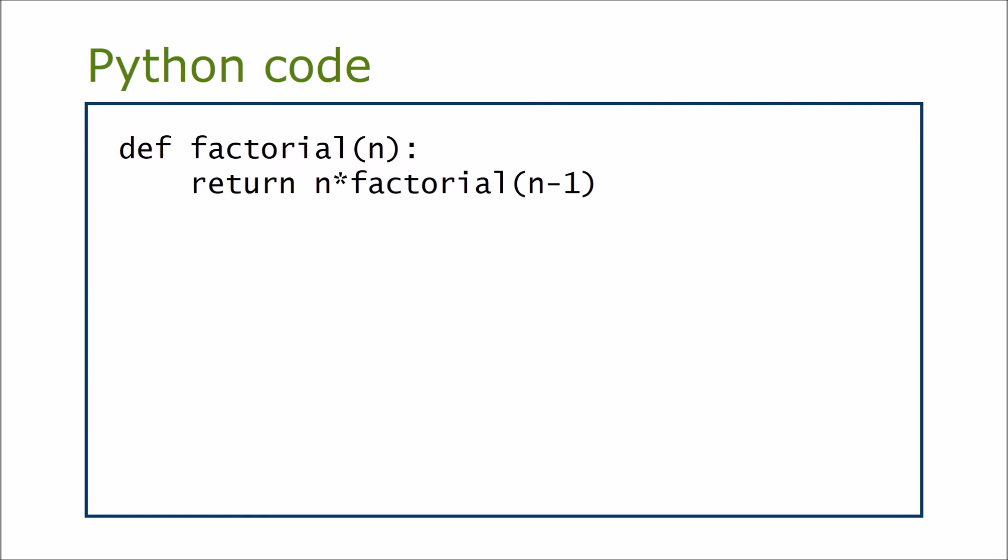To calculate the factorial, we multiply n by the factorial of n-1. This is the recursive part.